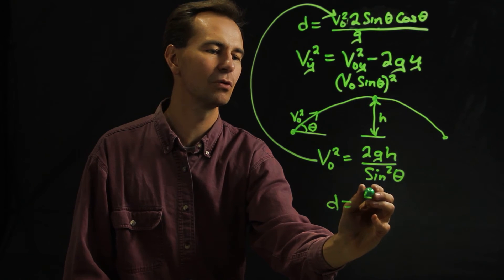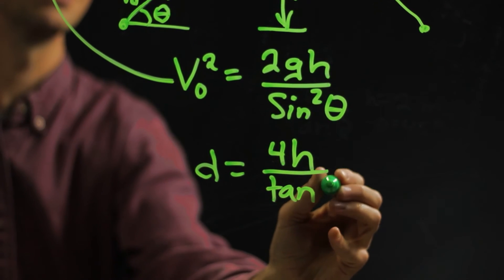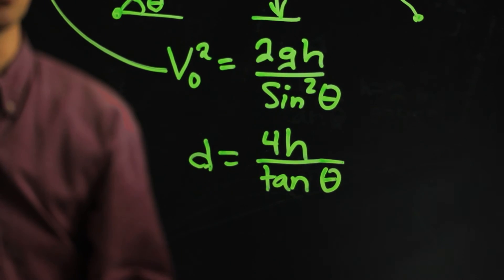D equals 4h divided by the tangent of theta. And that's what we're looking for.